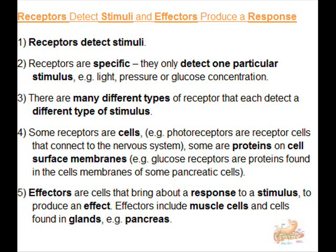There are many different types of receptor that each detect a different type of stimulus. Some receptors are cells — for example, photoreceptors are receptor cells that connect to the nervous system. Some are proteins on cell surface membranes — for example, glucose receptors are proteins found in the cell membranes of some pancreatic cells.